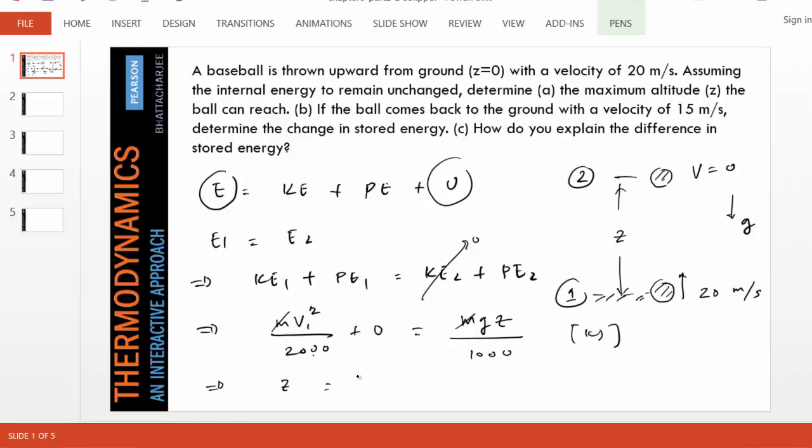So Z equals V1 squared over 2G. So it's 20 squared divided by 2 times 9.81, which is approximately equal to kind of 10. So it's approximately 20 meters. You can accurately calculate that if you want.